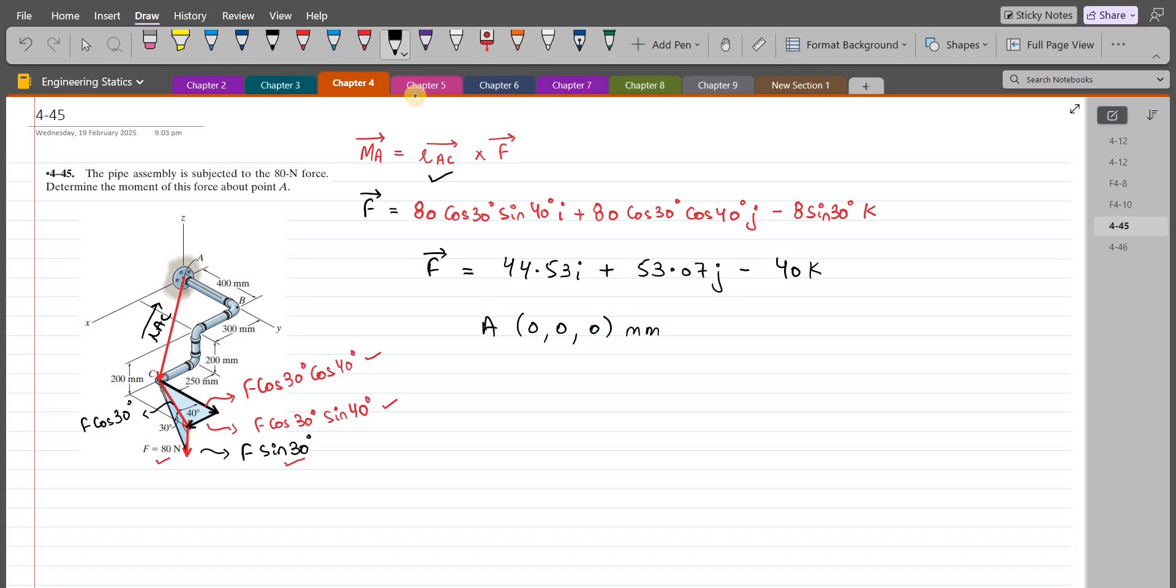The coordinates of point C are 300 plus 250 millimeters in the positive x-axis, so 550 millimeters. And it is 400 millimeters in the positive y-axis, and 200 millimeters in the negative z-axis, so negative 200 millimeters. For the position vector R_AC, we have to subtract the coordinates of A from C. So we have 550 i plus 400 j minus 200 k.